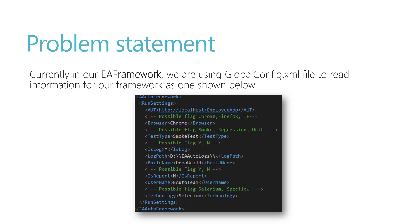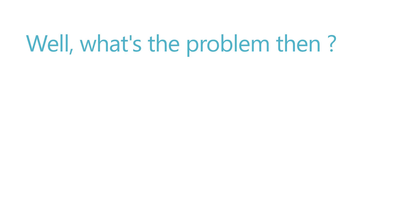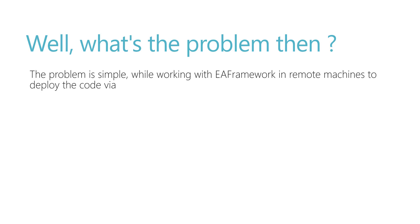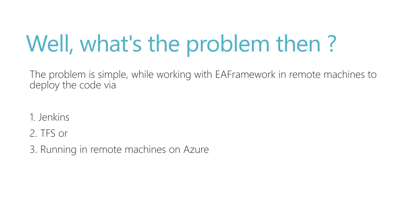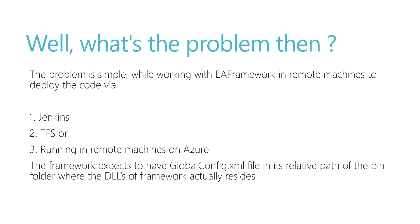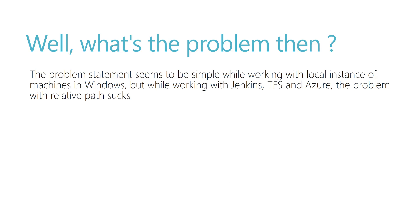Sometimes there are problems with the globalconfig.xml file itself. While working with EA Framework on a remote machine — deploying via Jenkins, TFS, or running on Azure — the framework expects the globalconfig.xml file to be in its relative path of the bin folder where the DLLs reside. We can change the path and redeploy the DLL, but while working locally on Windows it works fine. With Jenkins, TFS, and Azure, the problem with relative paths really, really sucks.